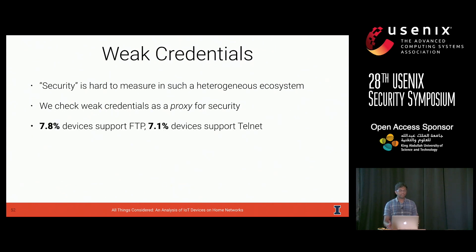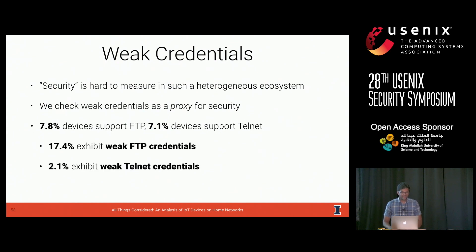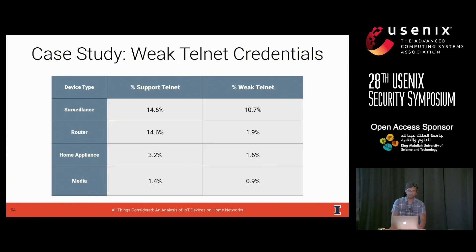We found that 7.8% of devices support FTP and 7.1% still support Telnet. Devices supporting FTP largely made sense — mostly work appliances at 78% and storage devices at 9%, which ostensibly need FTP to function. As for the 7.1% still supporting Telnet, I don't know why. Of these, 17.4% of FTP devices exhibit weak FTP credentials, and 2.1% of Telnet devices exhibit weak Telnet credentials. Digging into Telnet devices, they mostly come from four categories: surveillance devices, routers, home appliances, and media devices. Surveillance devices and routers have the weakest security, and in the most egregious case, 10.7% of surveillance devices that support Telnet offer weak credentials.